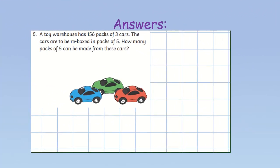Question 5. We are first told that we have 156 packs of 3 cars. So, we need 156 times 3. 6 times 3 gives us 18. 5 times 3 gives us 15. Add the one we carried is 16. 1 times 3 is 3. Add the one you carried. We have 468 cars.